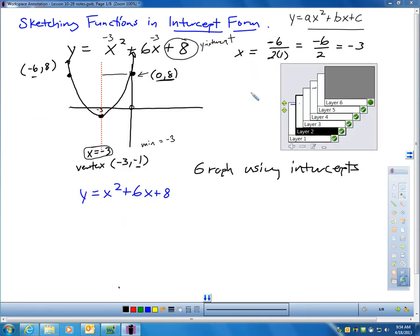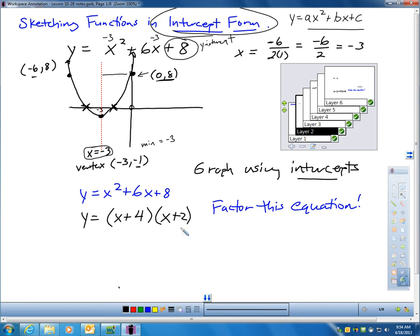Now, when you graph in intercept form, which is what we're going to talk about today, I'll just do a quick run-through of what that's like. First of all, intercept form is when you have it factored. So, if I factor x squared plus 6x plus 8, what times what's 8 and adds up to 6? It would be 4 and 2. This is factored form. This is intercept form.